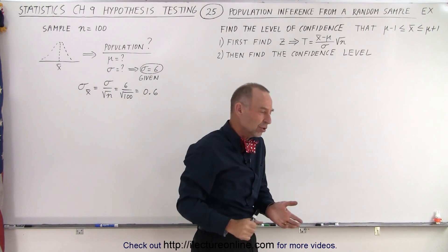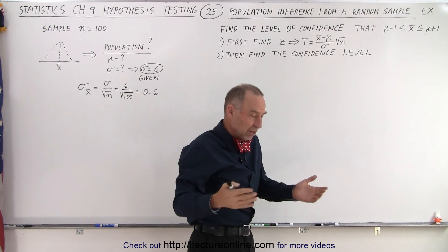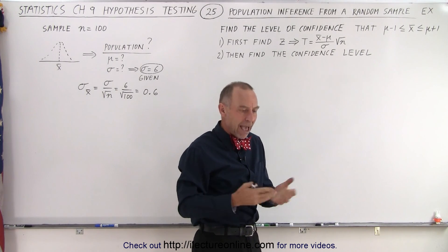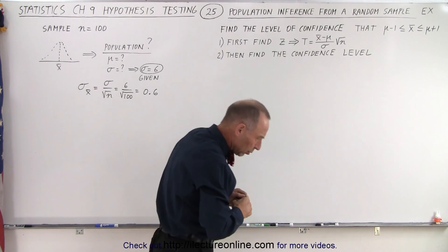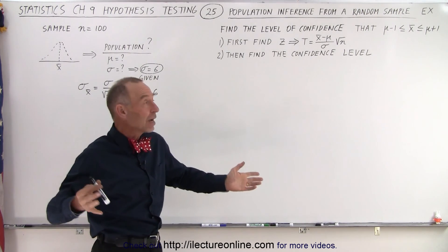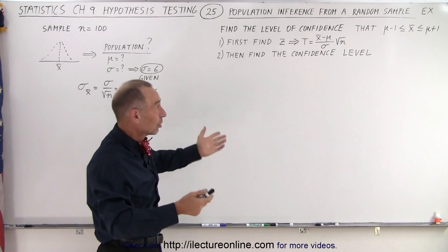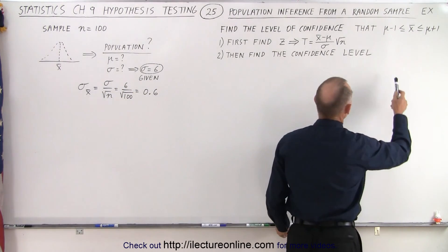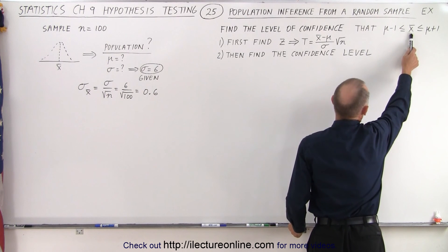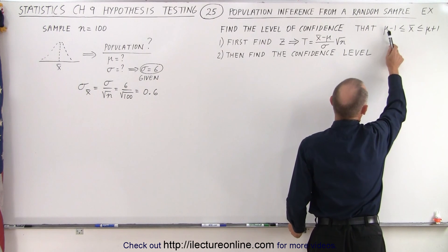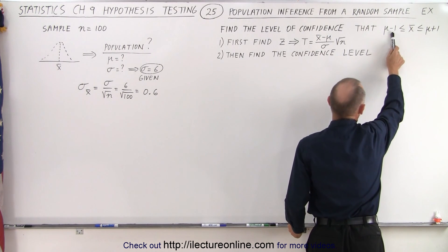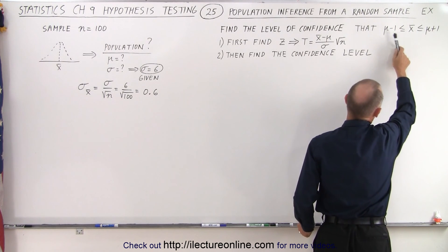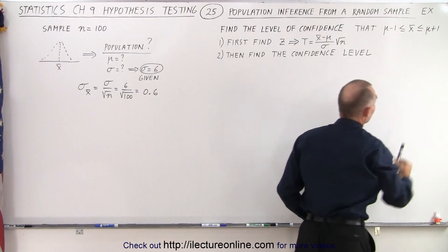What does that mean, plus and minus one unit? Well let's say that the mean is in miles, and the mean of the sample is ten miles. So you're looking to see what the level of confidence is that ten miles falls somewhere between the mean of the population minus one and the mean of the population plus one. For example, ten minus one is nine and ten plus one would be eleven.